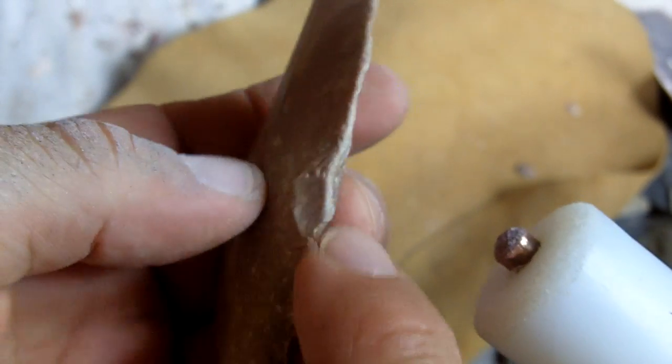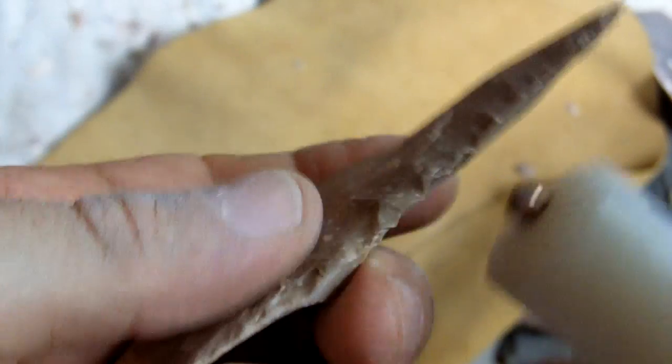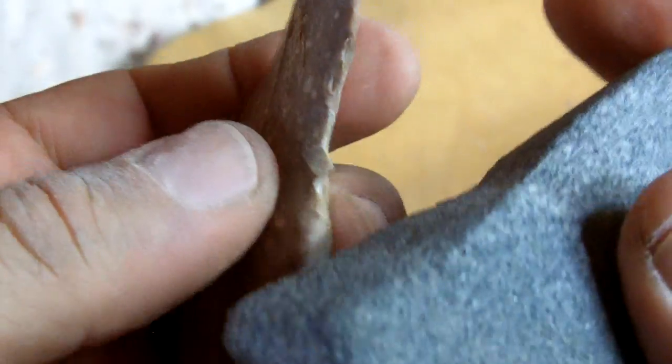I'm coming up to a thick spot so I'm preparing for a large flake here. It's kind of crushed so I'm just going to abrade it so that crushing goes away.